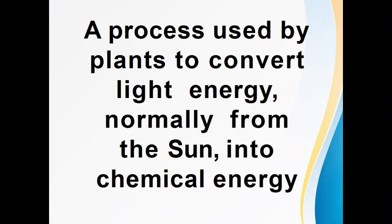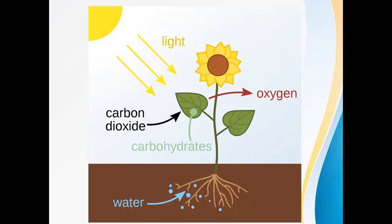Look at this slide. In this slide you can see a plant, and through this slide you can understand how photosynthesis is taking place. These are the plant leaves, and the food is being prepared in this part. The leaves get carbon dioxide from the environment, light from the Sun, and water and minerals from the soil.